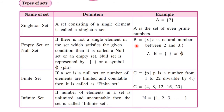Consider the example: B is the set of all x such that x is a natural number between 2 and 3. Is there any natural number between 2 and 3? No. Therefore, we can't write any number in this curly bracket. So it is an example of a null set, and we can represent it using only curly brackets or by using phi.